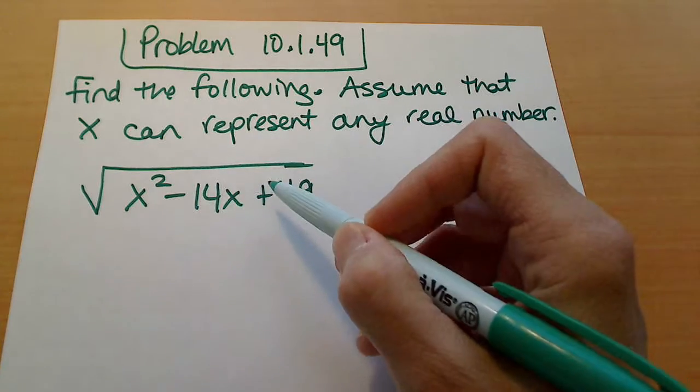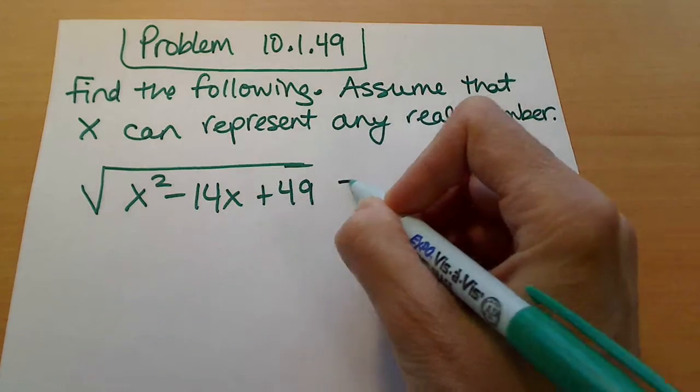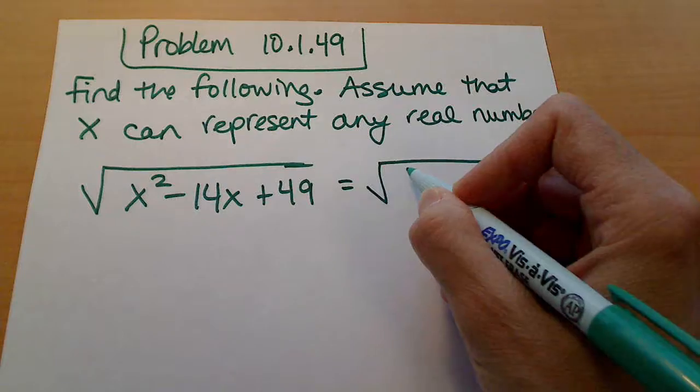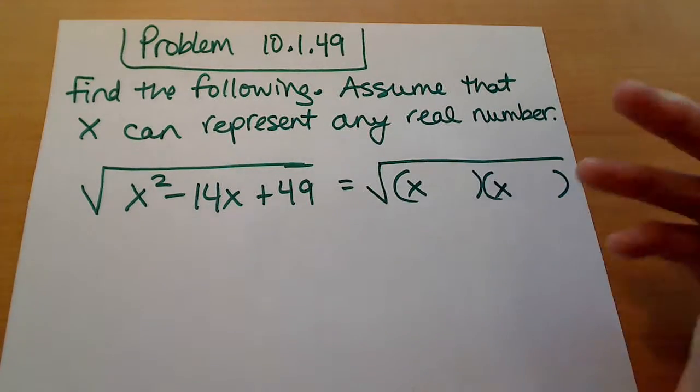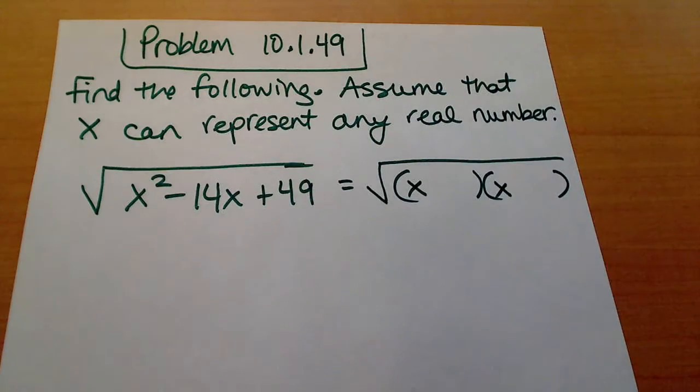So in order to simplify this, we would first of all need to factor this. And so I'm just going to use trial and error. You can use whatever method you were taught. If you were taught the AC method, you can use that.